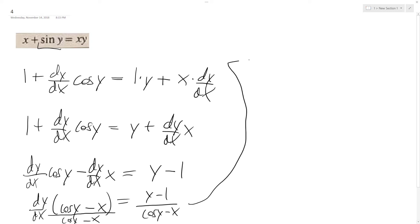And we end up with dy dx is equal to, I mean, I already have it down there, but y minus 1 over cosine y minus x. And if you wanted to, you could divide the top and bottom by a negative 1 over negative 1, so you end up with... Either way.